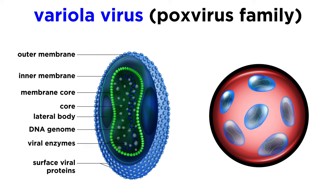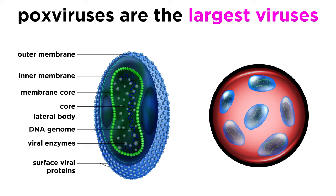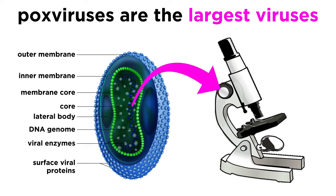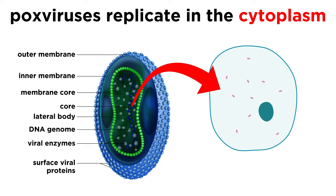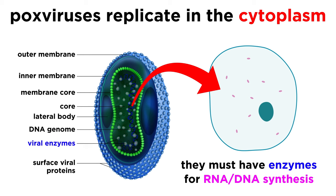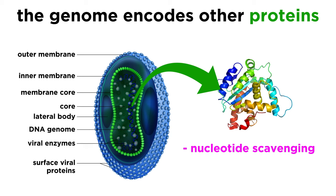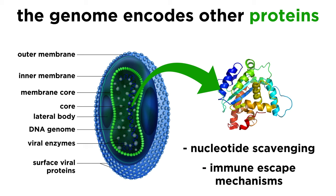So what causes it? The virus that causes smallpox, which is called the variola virus, falls into the poxvirus family. Poxviruses are the largest of all viruses, so large that they are almost visible using light microscopy. They have large double-stranded DNA viral genomes, and replicate in a unique way compared to other DNA viruses. Poxviruses replicate in the host cell cytoplasm, which means they must encode the enzymes required for messenger RNA and DNA synthesis in their viral genome. These viruses also tend to encode proteins for nucleotide scavenging or immune escape mechanisms, which explains their large size.